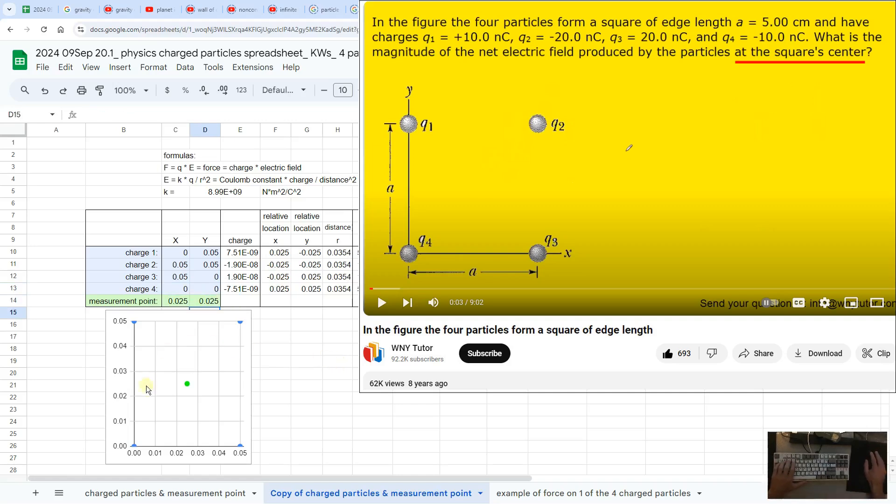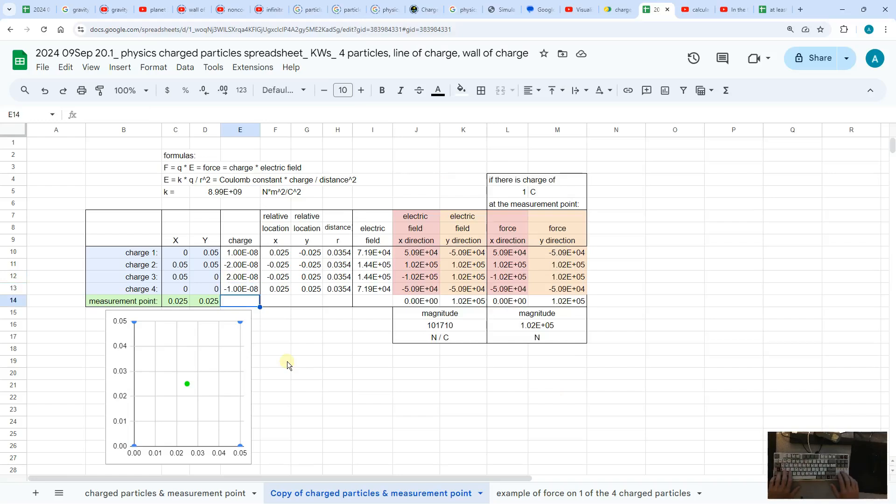And the picture kind of gives a check, so that looks good. Charge one is positive 10 nanocoulombs, charge two is minus 20 nanocoulombs, charge three is positive 20 nanocoulombs, and four is negative 10 nanocoulombs.